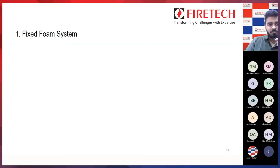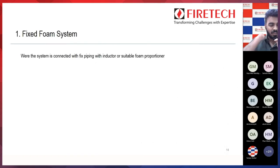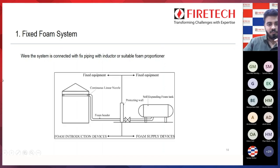A fixed foam system means everything — starting from your bladder tank, which is your storage device, your proportioning device, and your discharge device — all three devices are fixed and cannot be moved. That is called the fixed foam system. From the photo you can see that your bladder tank and discharge devices are all fixed, nothing is movable.